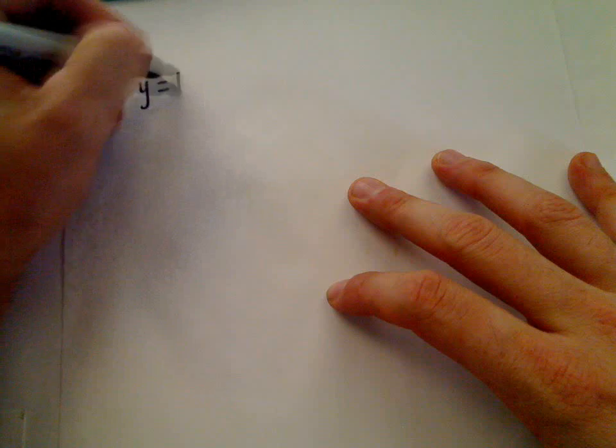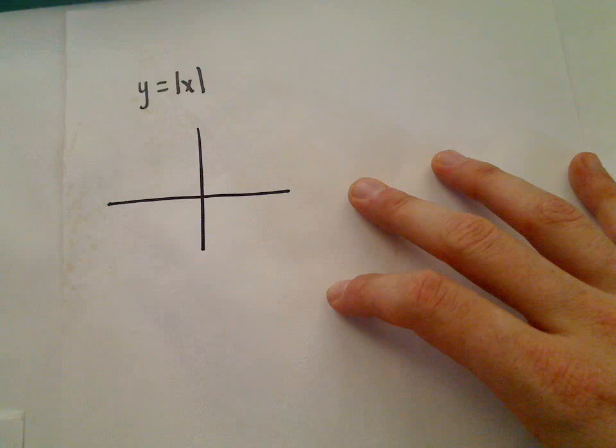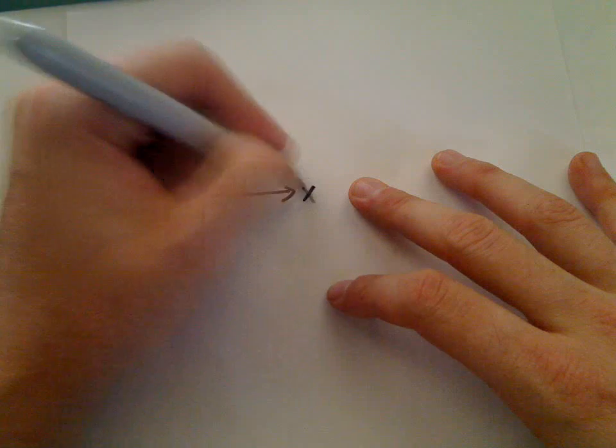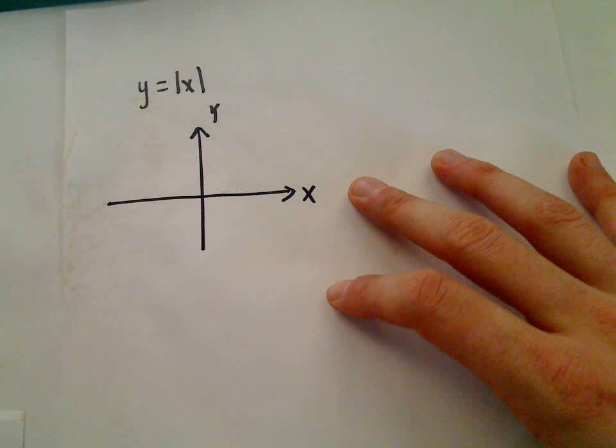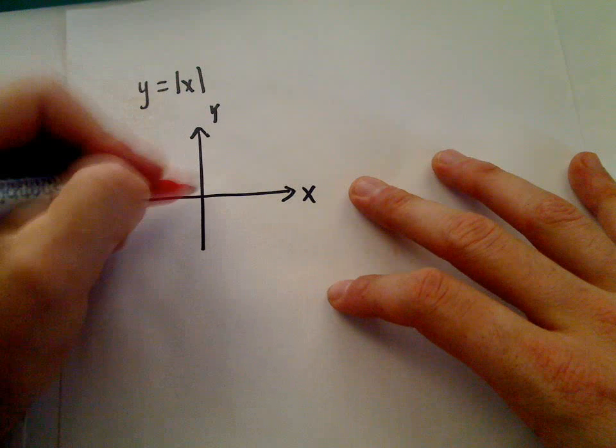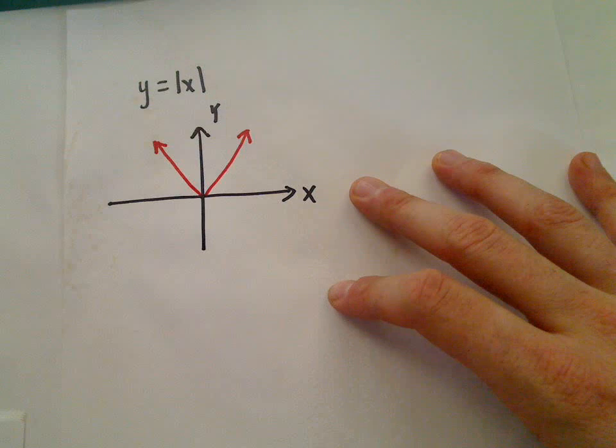Remember, if you graph y equals absolute value of x, the graph of absolute value of x is simply going to be that v-shaped graph. So y equals absolute value of x will be our familiar v-shaped graph.